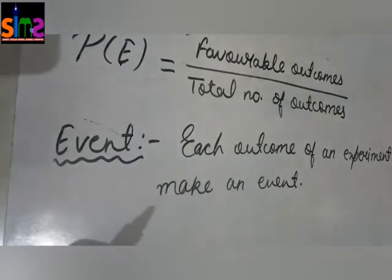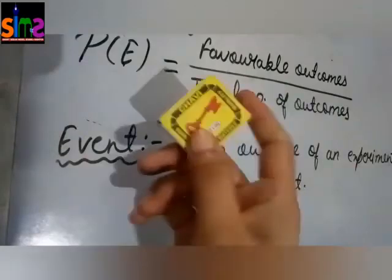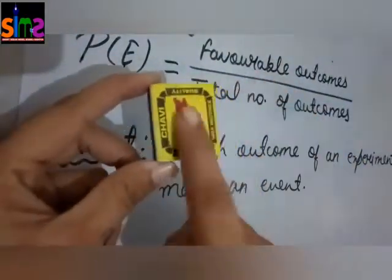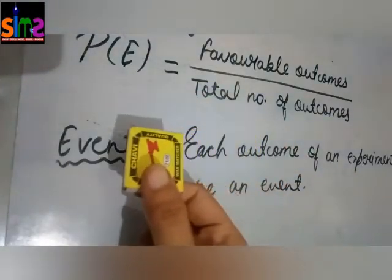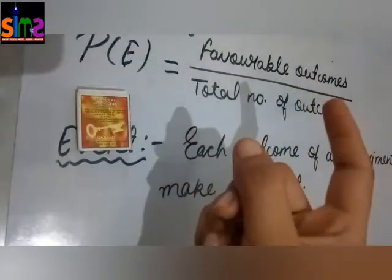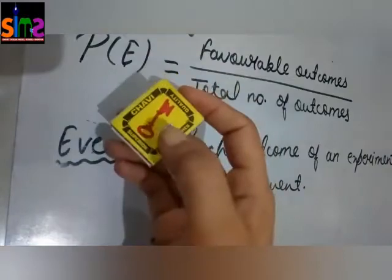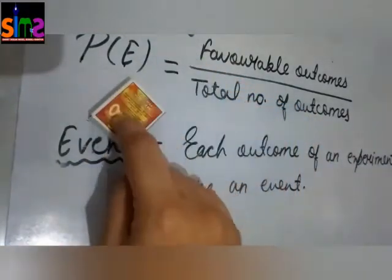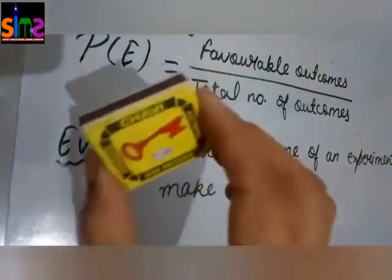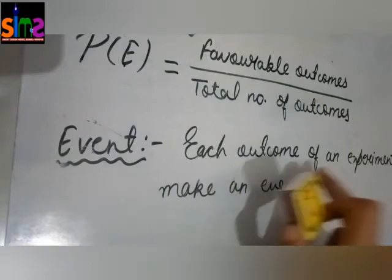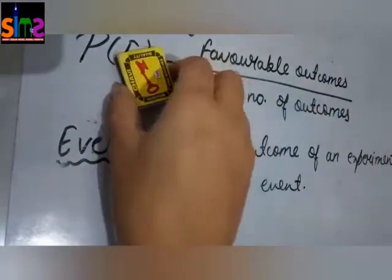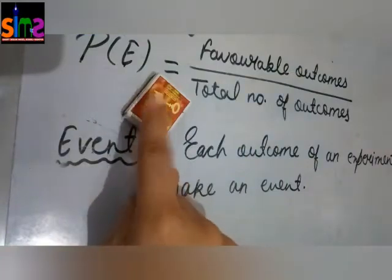If you have a coin — for example, I have this matchbox. As you can see, it has a head side and a tail side. So if I toss it like this, either I get tail or head. Getting a tail or getting a head is an event, and tossing it is the experiment. So each outcome of an experiment makes an event.